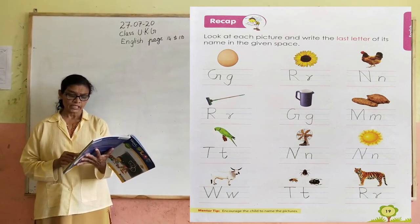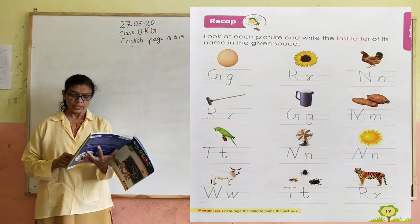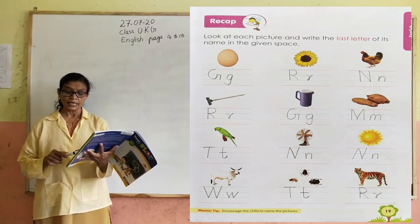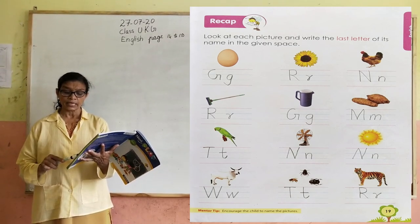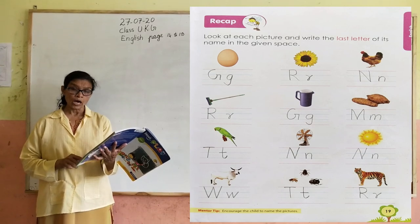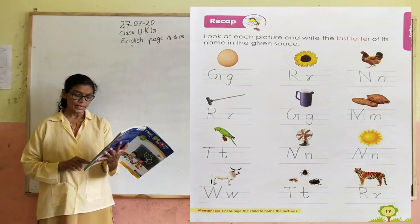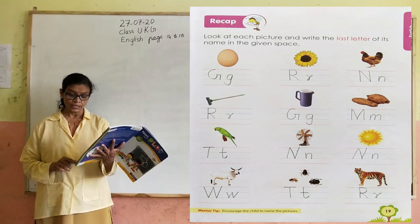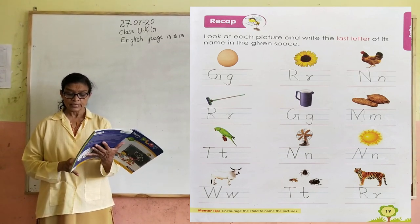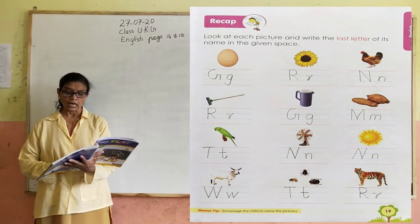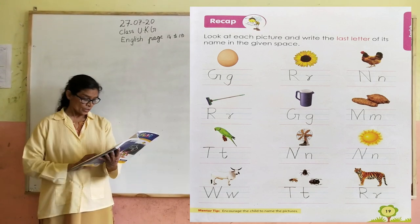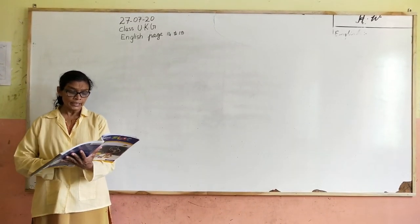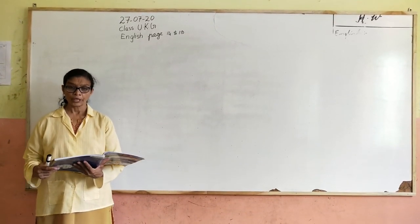Parrot — last letter of parrot is T. Fan — last letter of fan is N. Sun — last letter of sun is N. Cow — last letter of cow is W. Insect — last letter of insect is T. Tiger — last letter of tiger is R. Understand? This pages 18 and 19 you will learn and read in your book. Okay. Thank you.